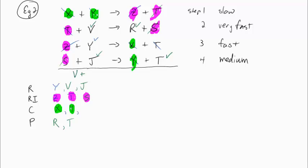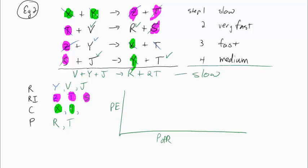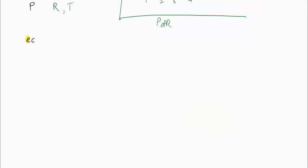R is produced and T is produced also. J gets used up. The overall reaction is just what's left over after we've removed the reaction intermediate and the catalyst. This reaction overall is slow, and since there are four steps there will be four potential energy bumps. The slowest step is step one, the rate determining step, so it will be the highest.